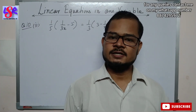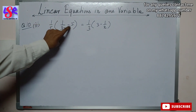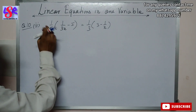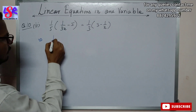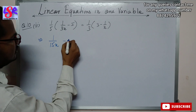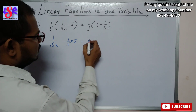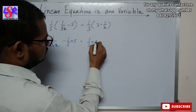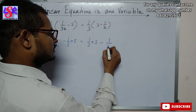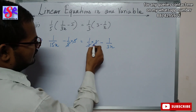Now we do question number 10, second part. Here we have (1/5)(1/(3x) - 5) = (1/3)(3 - 1/x). Opening brackets: 1/(15x) - 1 = 1 - 1/(3x). Here 5 and 5 cancel; 3 and 3 cancel.